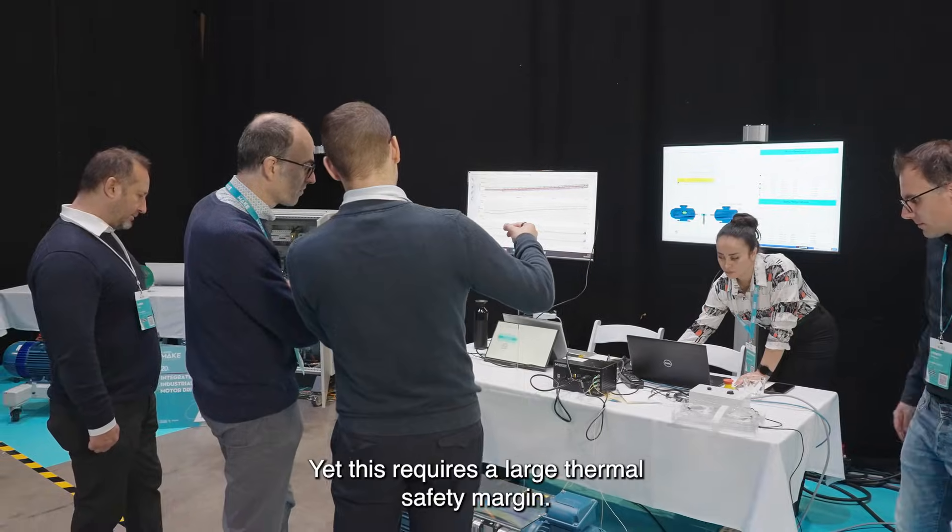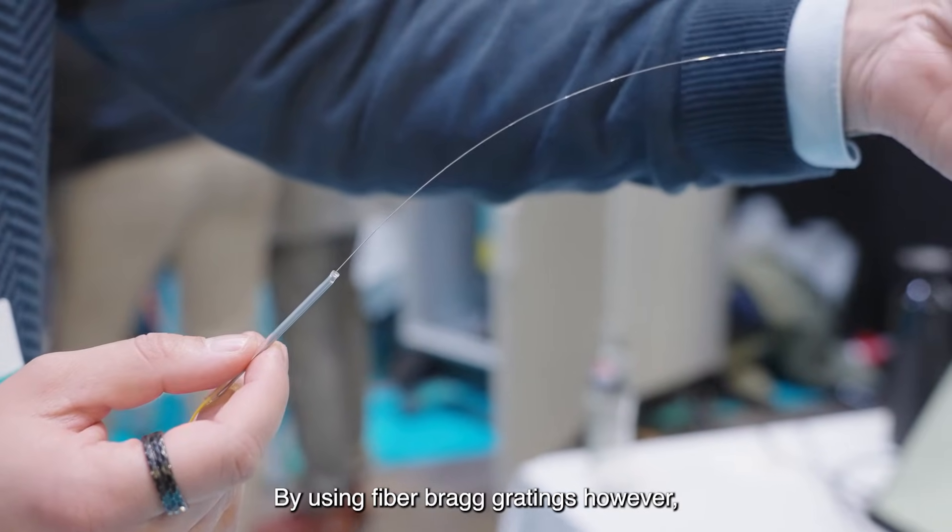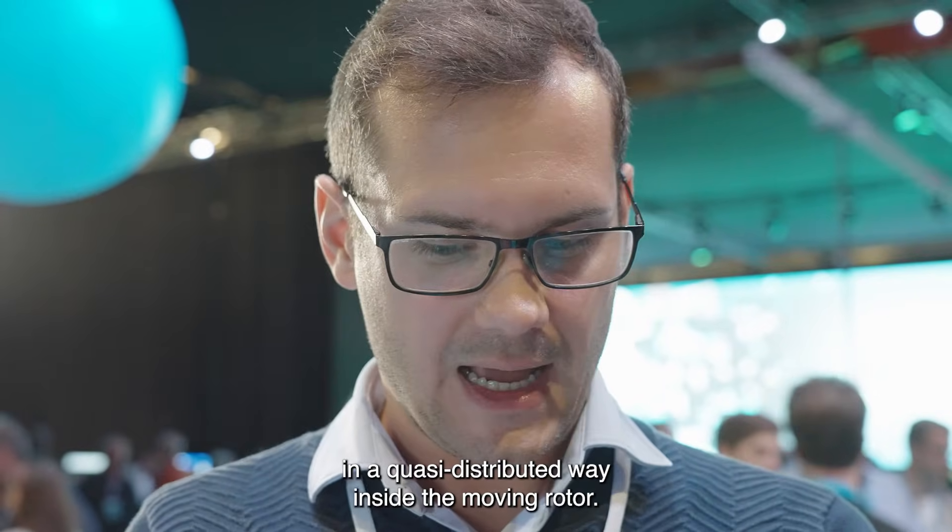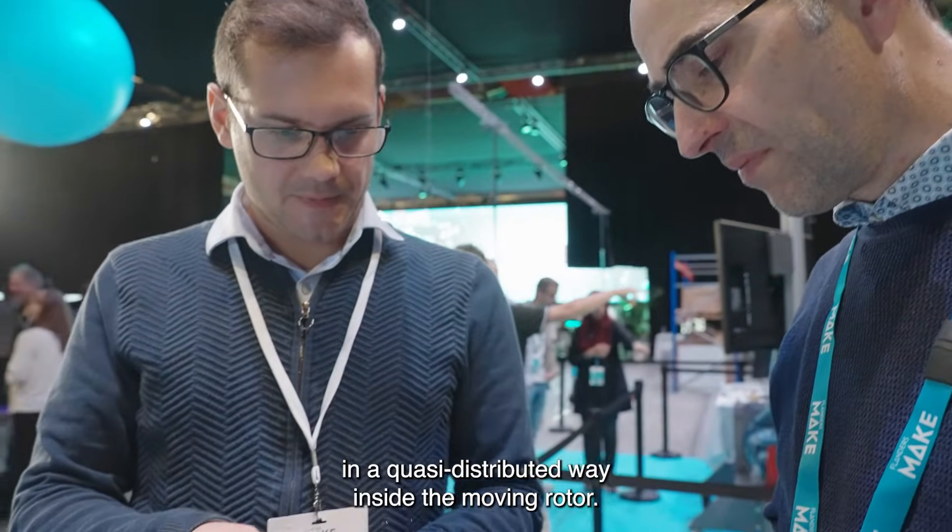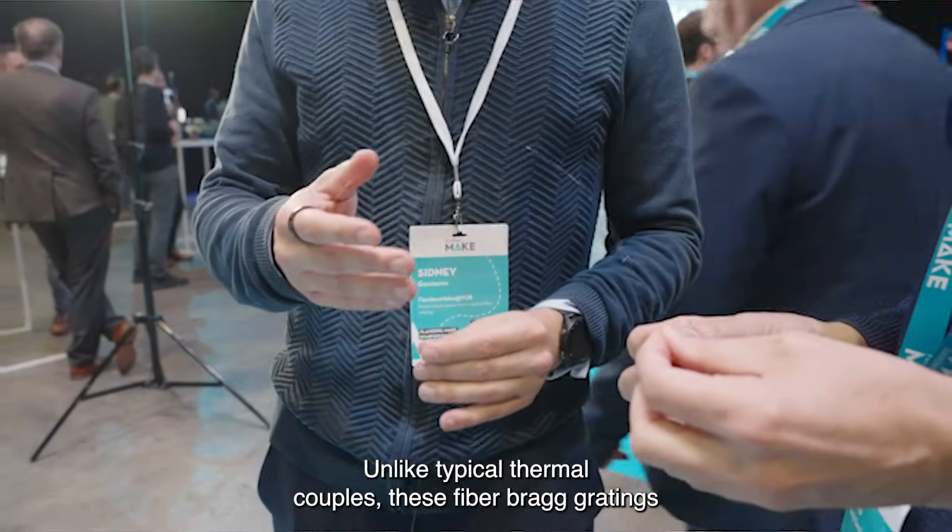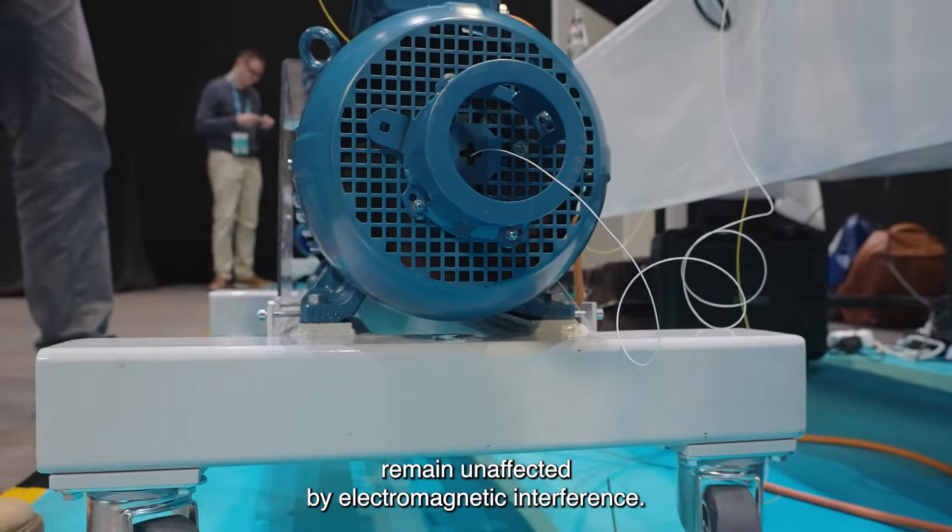Yet this requires a large thermal safety margin. By using Fiber Bragg Gratings, however, we are able to accurately measure temperatures in a quasi-distributed way inside the moving rotor. Unlike typical thermocouples, these Fiber Bragg Gratings remain unaffected by electromagnetic interference.